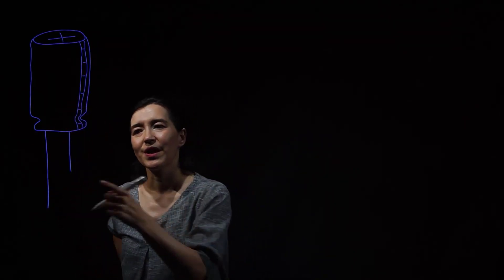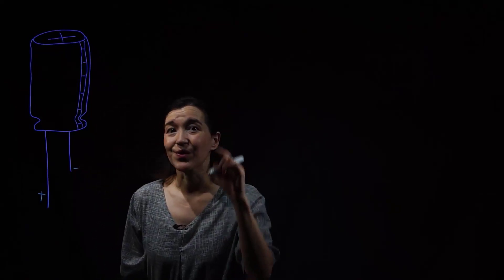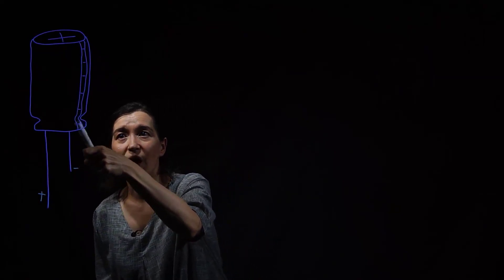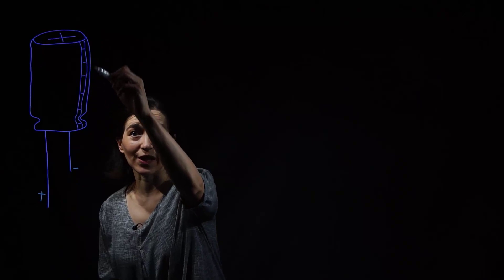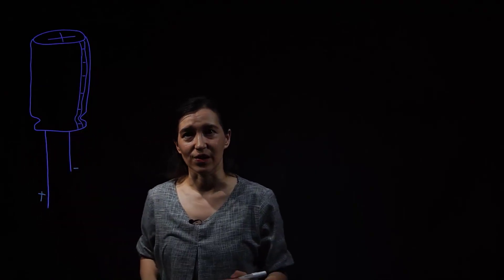There's usually two different leads here. The longer one is usually, I think the convention is positive, and the shorter one is negative. You can also double check by looking, usually on the can there's like a little negative label, like a strip here, and that's closer to the negative one. So even if they kind of get cut or something, you can still look for that.